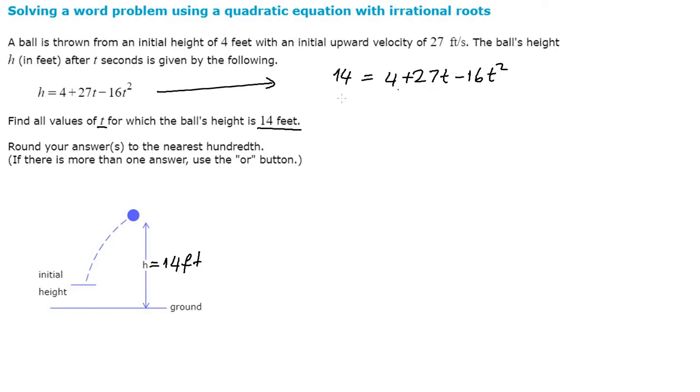If I multiply both sides of this equation with negative, then I can get this as negative 14 is equal to negative 4 minus 27t plus 16t squared. If I write 16t squared and I want to write it in standard form, if I add 14 on both sides, this equation turns to be 0 equals plus 10, because negative 4 plus 14 is positive 10, minus 27t plus 16t squared.